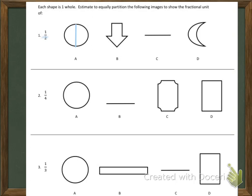Let's look at B. We're going to draw a line right through the middle to give us two halves. At C, we're also going to go right through the middle. And finally at D, we're going to draw a horizontal line to give us two halves.